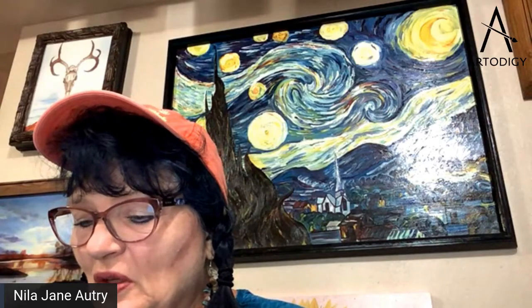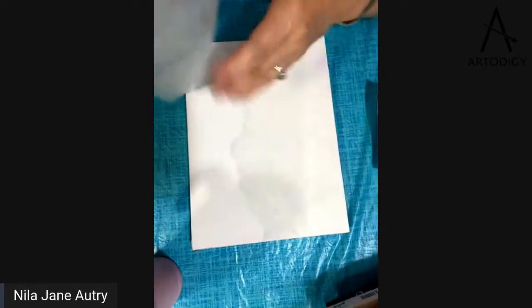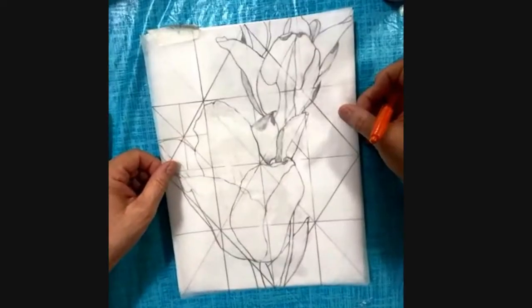So just a quick review. We did a black and white print of the tulips that we're going to paint. We did the grid X pattern, and you have enlarged it onto a piece of tracing paper. And so this video is about what's next.